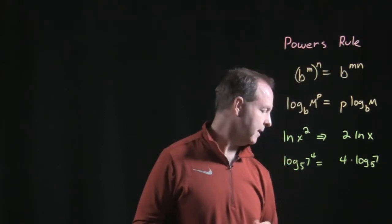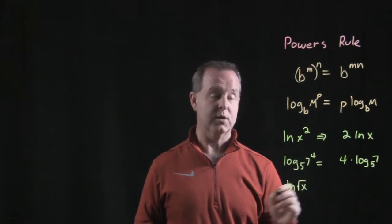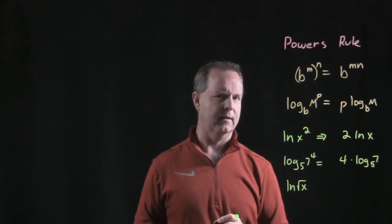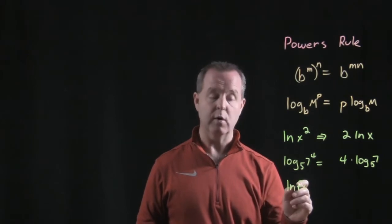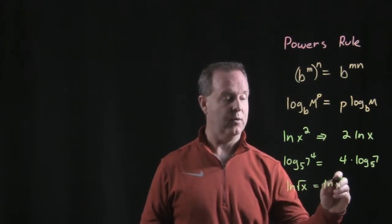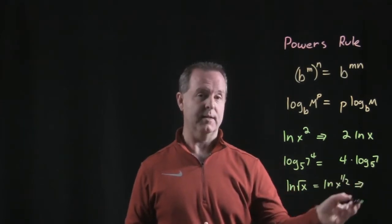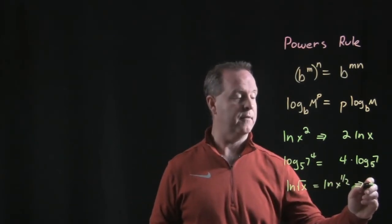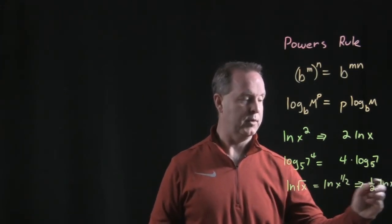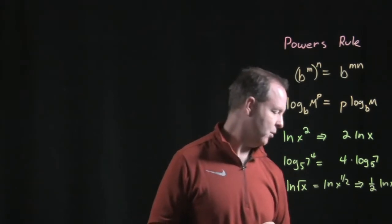Let's look at the natural log of the square root of x. There's no exponent there, is there? Yes, there is — because the square root of x can also be written as x to the 1/2. Now I see the exponent, so I can drop that out in front: 1/2 times the natural log of x.